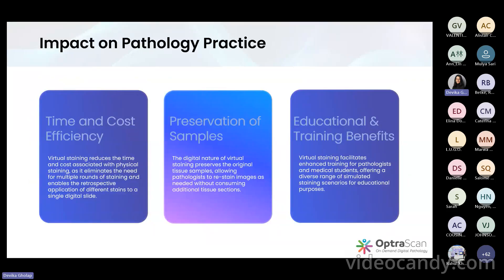If you're wondering how this impacts pathology practice, it benefits in every way. It saves time, saves costs, and preserves tissue samples because you don't have to go back and cut a new section for IHC — you can use the same sample. It also aids in educational and training scenarios. Virtual staining saves time by eliminating multiple rounds of staining on different tissue sections. And since there are no physical dyes involved, the pathologist can actually generate multiple stains on the same tissue — multi-stained image generation, all virtually.